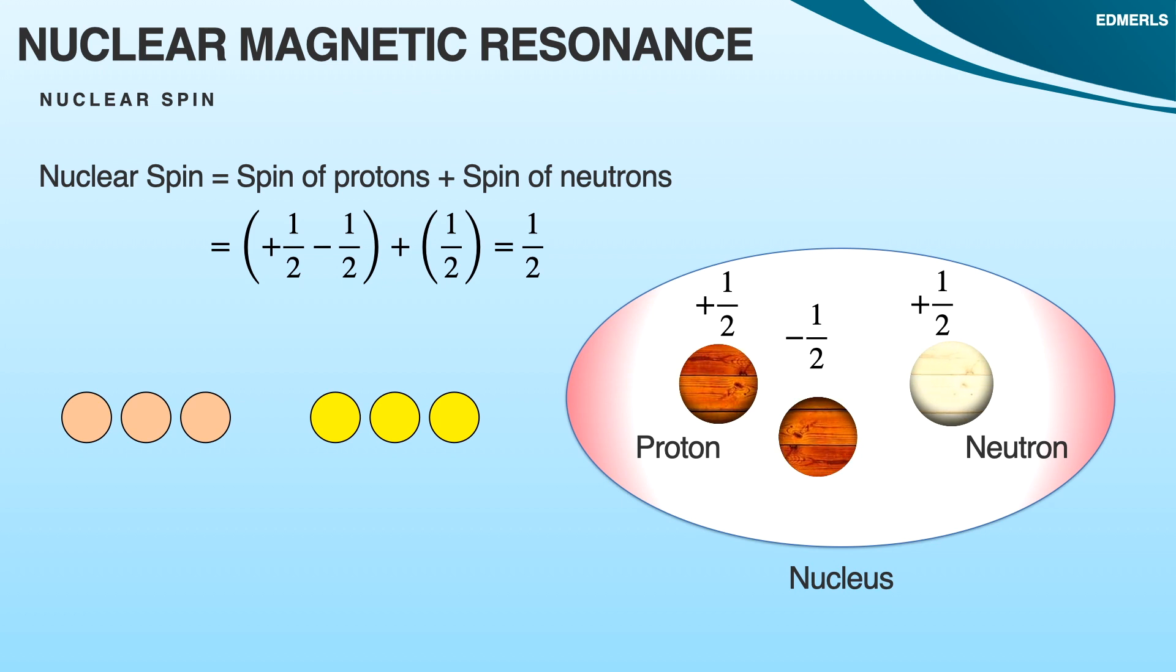In this case, as we can see, two protons of opposite spin can cancel each other, but one neutron has plus half spin. So the nucleus will have total plus half spin. Similarly, if there are more protons and neutrons, for example four protons but only one is paired, while there are five neutrons and two are paired, the nuclear spin will be three by two, as the spin of proton cannot be paired with neutrons.